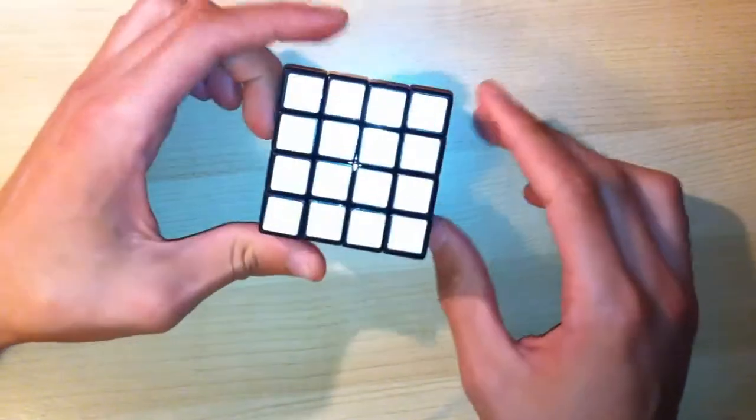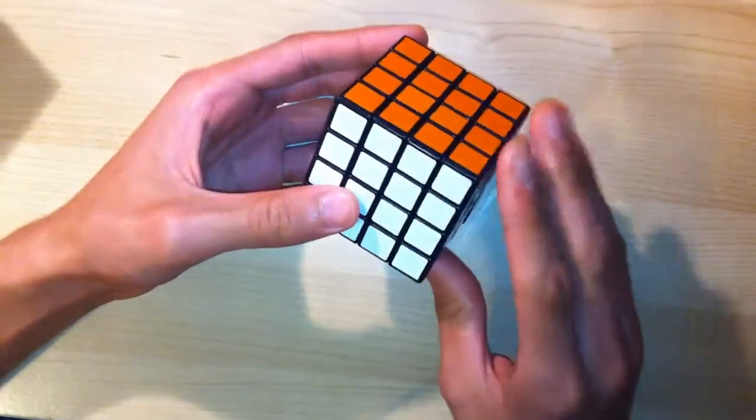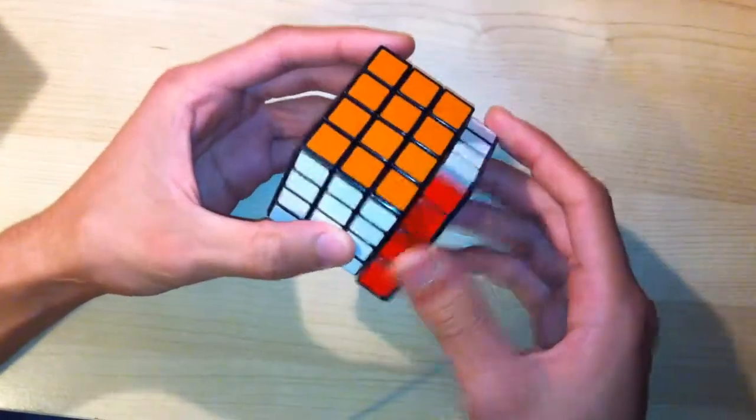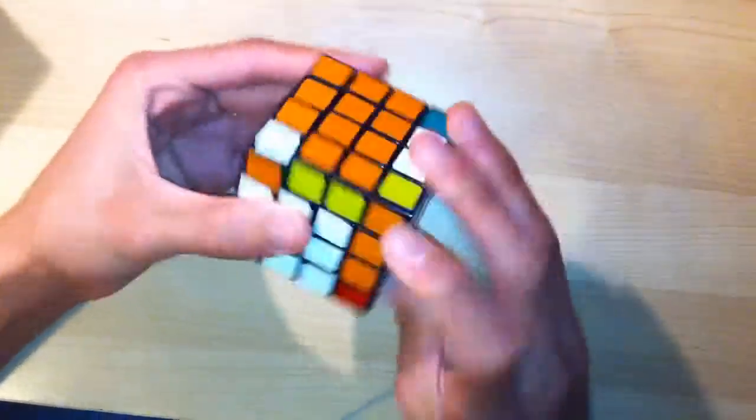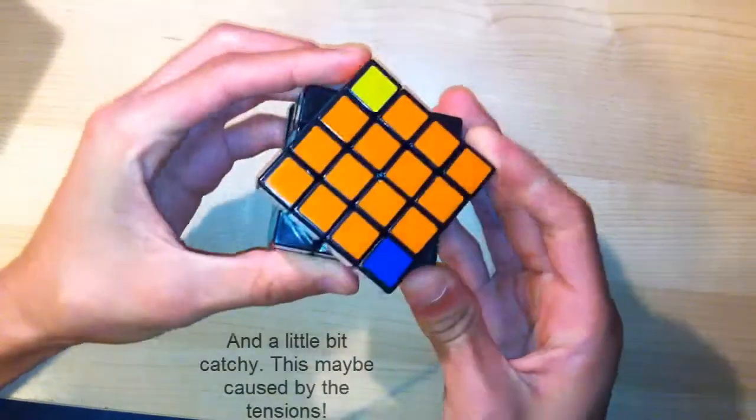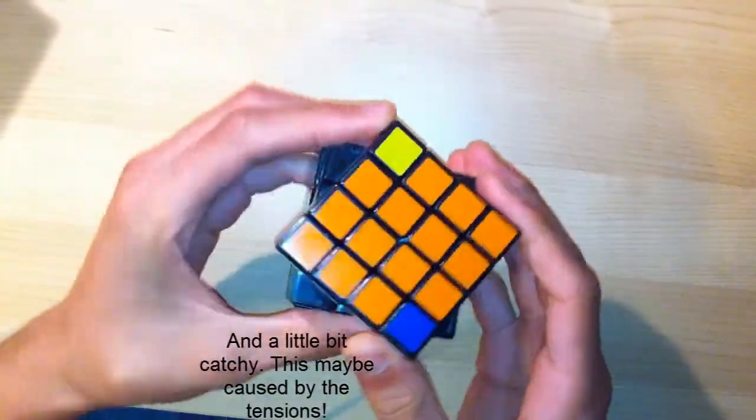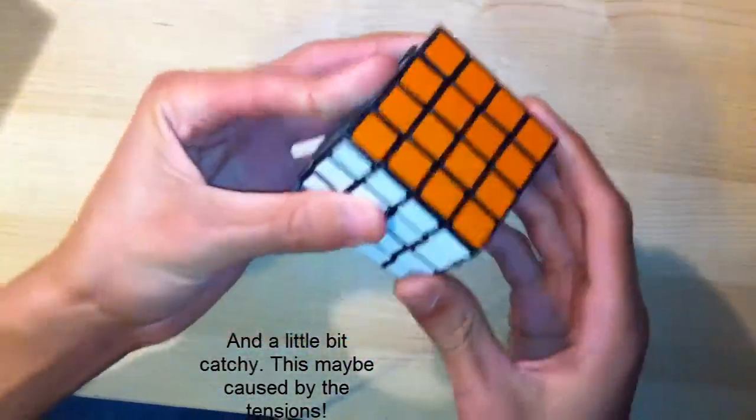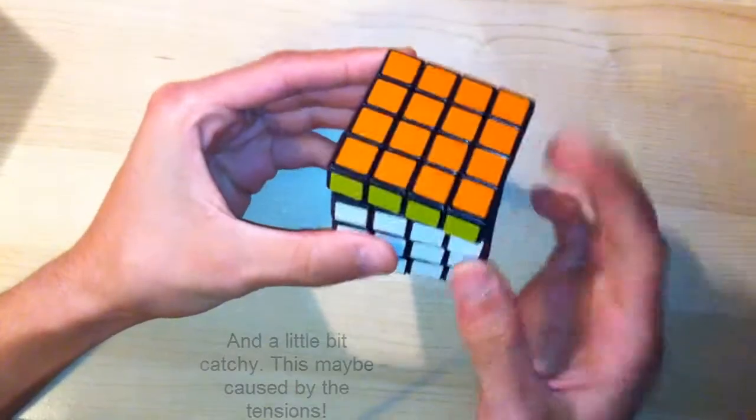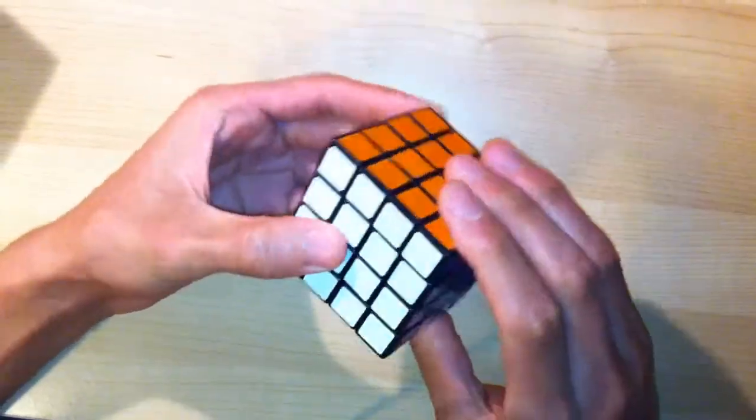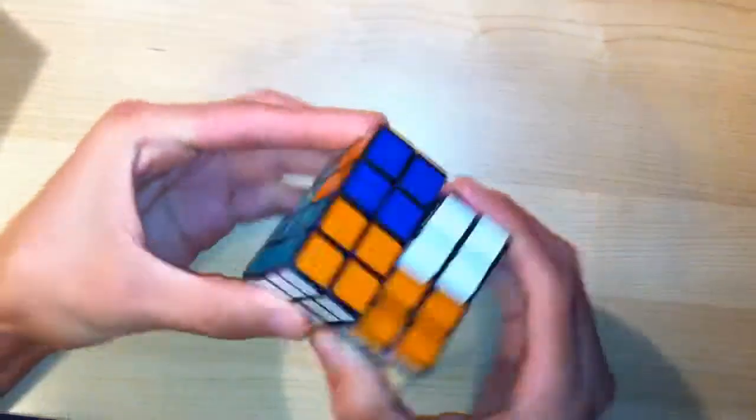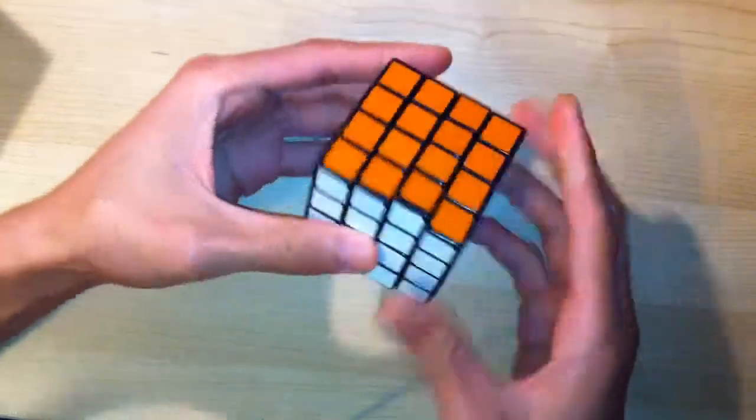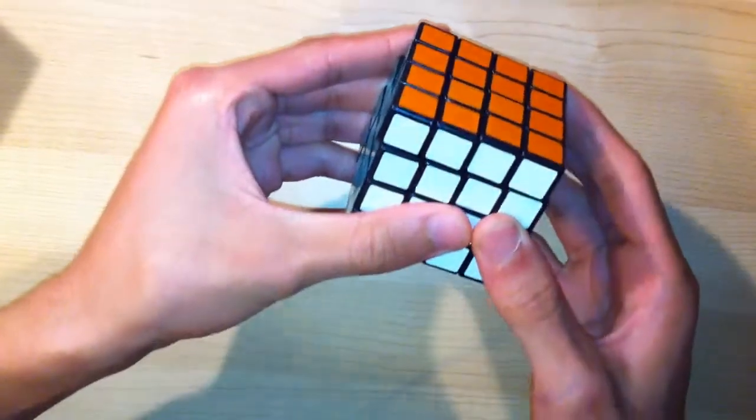So let's go first impressions with first turns. Wow, this is very smooth. Now I think it's a little bit loose too - I might need to adjust the tensions on this. However, if it's been lubed, the lube that's been used is really good. It's very smooth. So let's go ahead and see corner cutting.